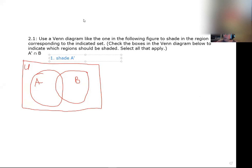So A prime is going to be anything that's not A. So this is my A circle. One way to think of it is if I were to color all of A and then invert it, that's what I'd be coloring.